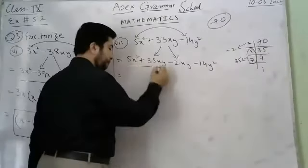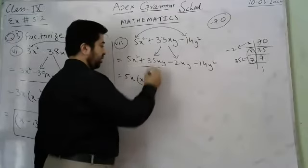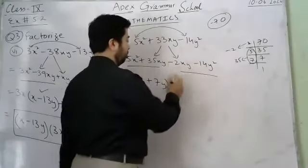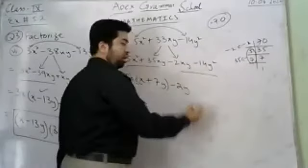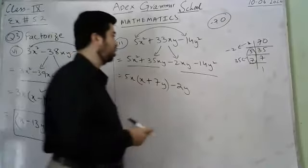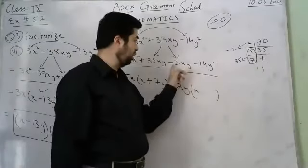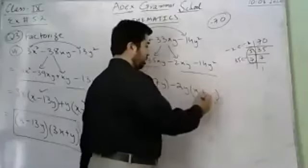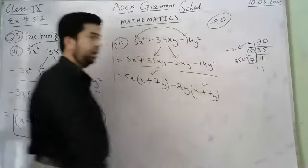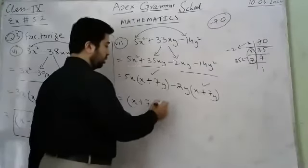Rewrite as 5x² plus 35xy minus 2xy minus 14y². Take 5x common from the first two terms: 5x(x plus 7y). Take minus 2y common from the last two terms — lowest power is y — giving minus 2y(x plus 7y). Both groups share (x plus 7y).